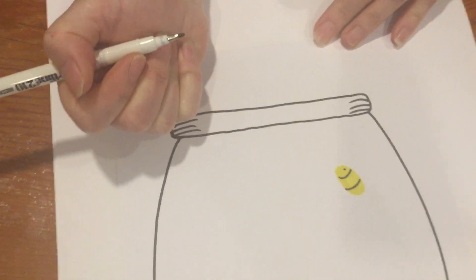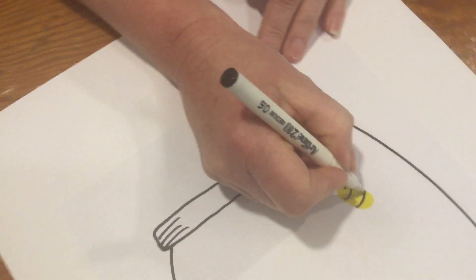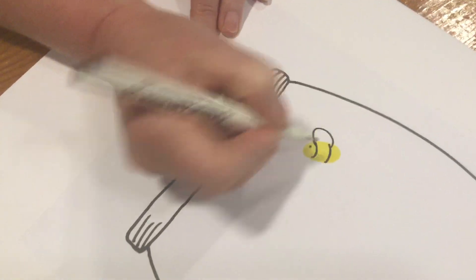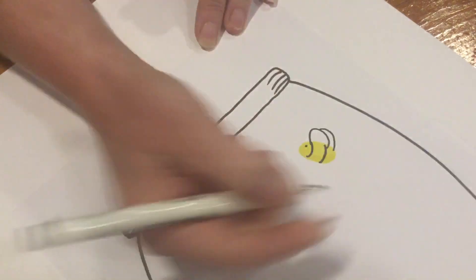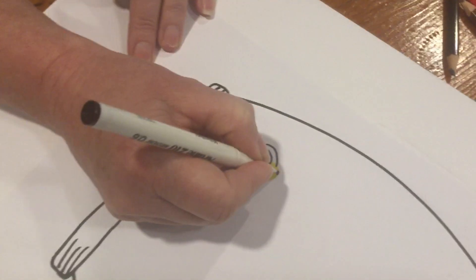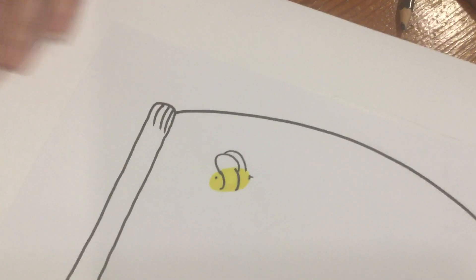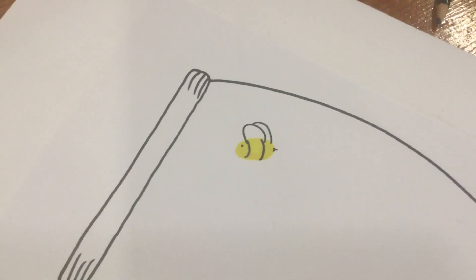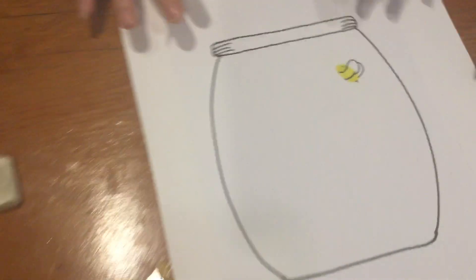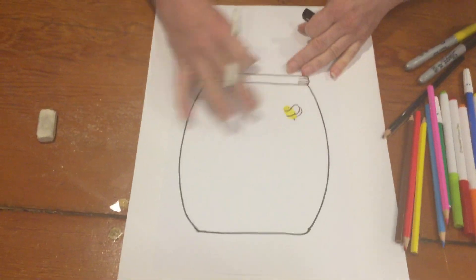Now my bee is going to be flying. That's his eye on this side and we need a wing, so I put a wing and then another wing behind that wing. And of course bees have got a little stinger on their bottom, so there is our bee, one bee drawn.